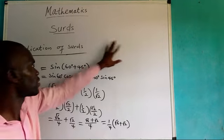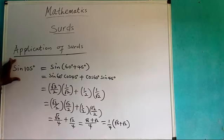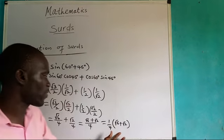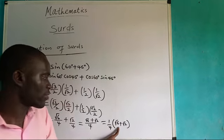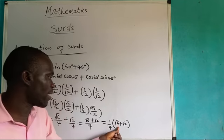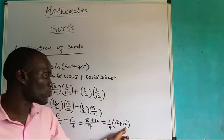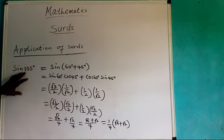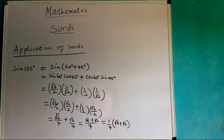Put your value down. And come for this very one. With that same calculator, calculate one-fourth times root 6 plus root 2. With your calculator divide by 4. You will obtain the same thing with sine 105 degrees.